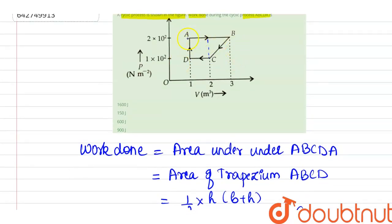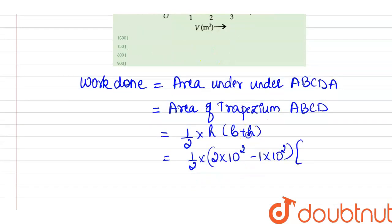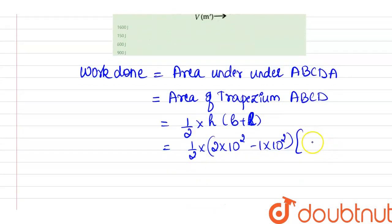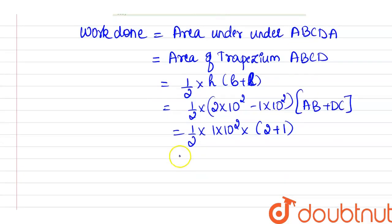B plus H are the parallel sides. So B will be AB distance, which is 3 minus 1, 2. And H will be, this will be DC. So this is going to be AB plus DC, which will give me half into 1 into 10 to the power 2. AB is 2 and DC is 1. So this will be 3 by 2 into 10